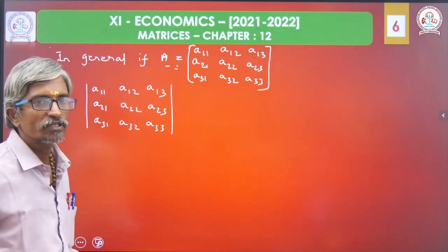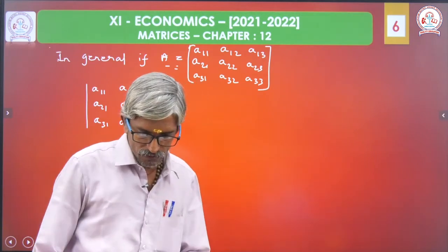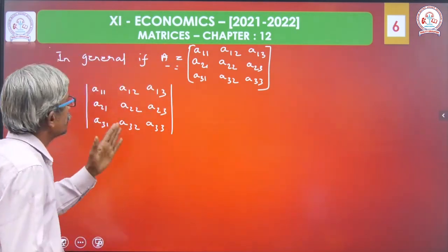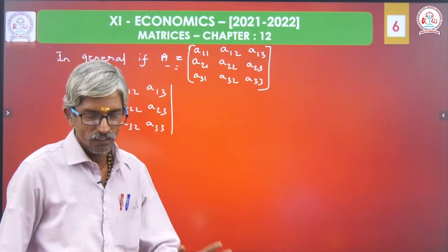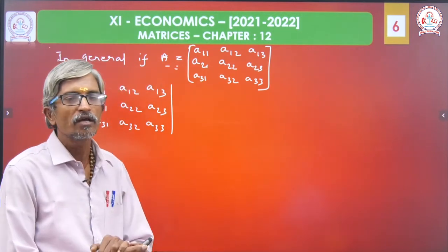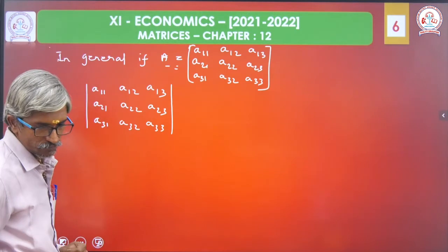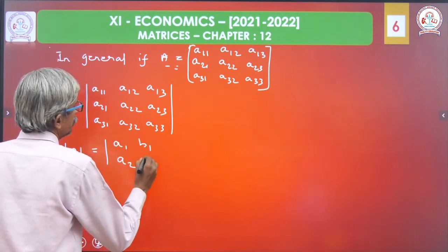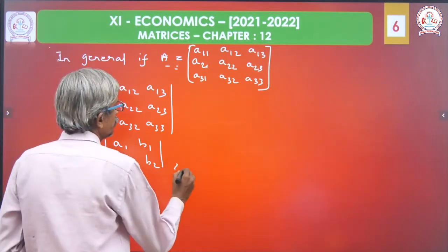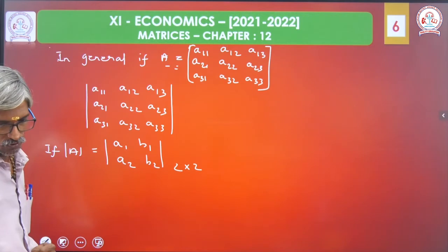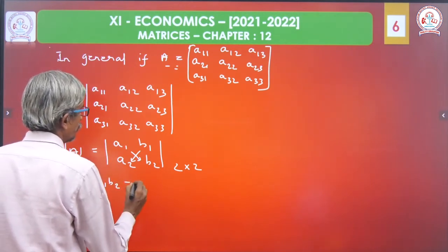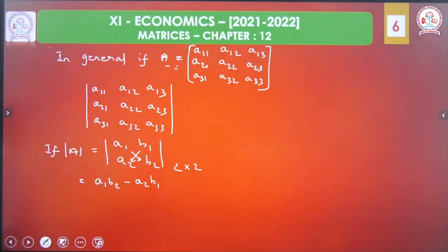If the determinant is 2 into 2 — with elements A1, B1, A2, B2 — the determinant of A equals A1B2 minus A2B1. This is only for a 2-row, 2-column matrix. For 3 into 3, we will add one more term.